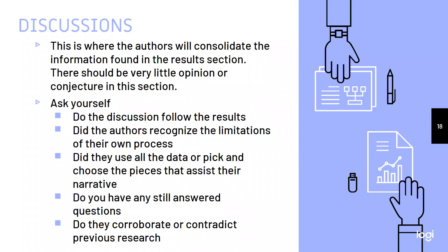Did they use all the data or did they pick and choose the pieces that assist their narrative? When you were looking at all those charts and all those numbers and all those letters, do you see enough of that information in the discussion section? Do you have any questions that are still unanswered as a fellow scholar? Are you still wondering what's going on? And finally, do they corroborate or contradict previous research in that literature review that you saw, or even your own previous research that you've seen?